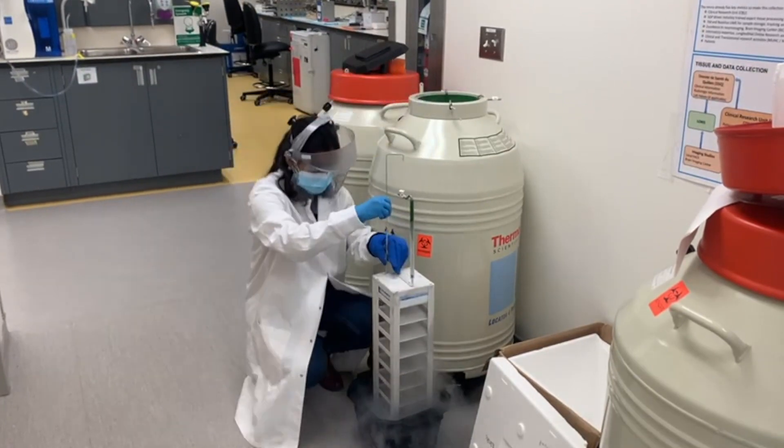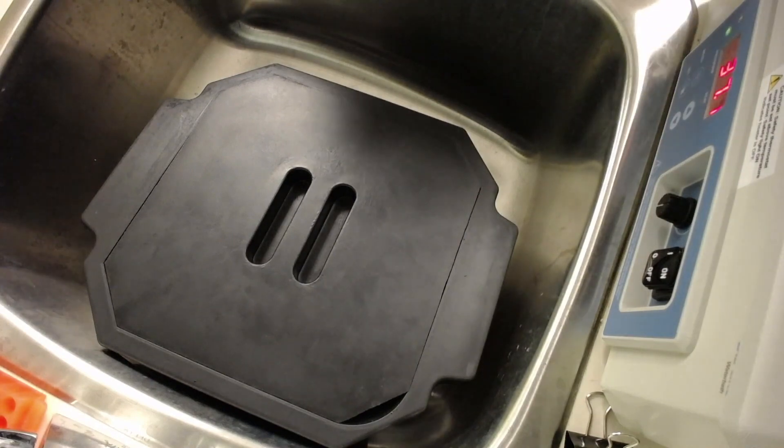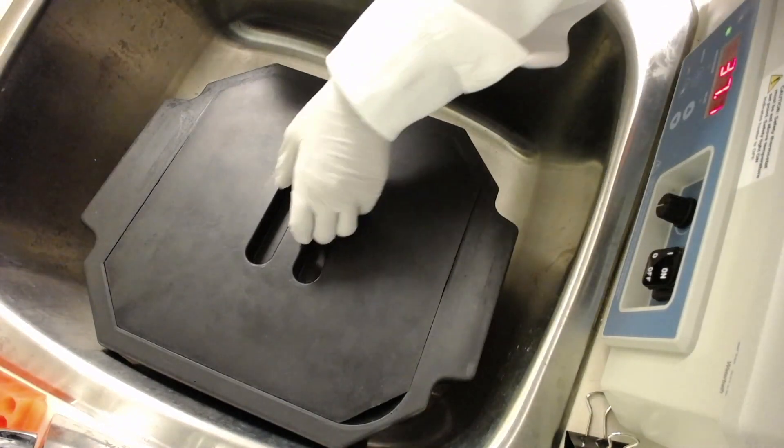Transfer some liquid nitrogen to a liquid nitrogen transfer container and add the cryovial to it. This will keep the vial frozen until cells are ready to be thawed.